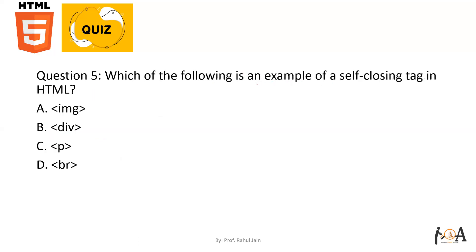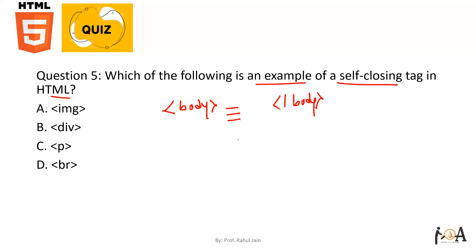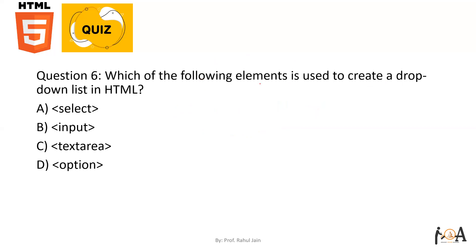Question number five: which of the following is an example of a self-closing tag in HTML? Normally, for every open tag like body, you need a corresponding closing tag. However, some tags do not require a closing tag — for example, the image tag is self-closing and the BR (line break) tag is also self-closing. So both option A and option B are correct, because both tags are self-closing tags.